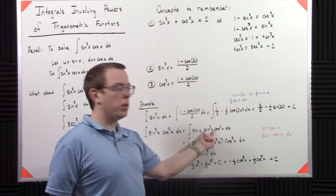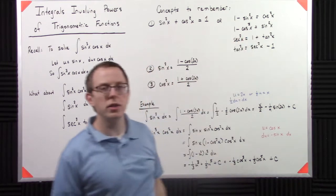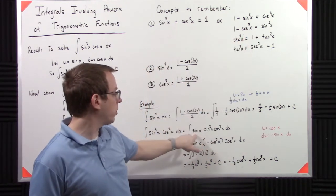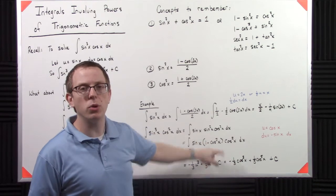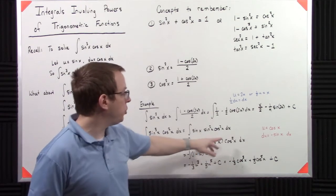The reason I'm going to do this is because then I can take this identity, sine squared x equals 1 minus cosine squared x. So I'll take the same thing and convert that to 1 minus cosine squared x. The reason I want to do that is then I can use a u substitution.